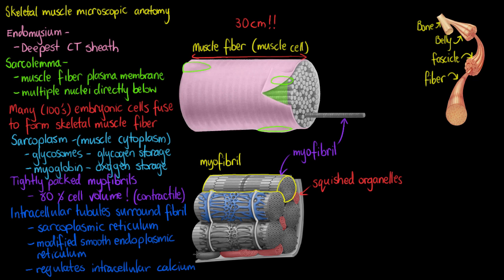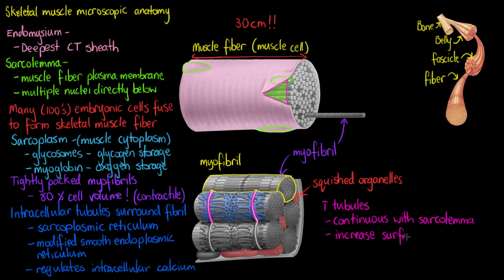The second tubule is called the T-tubules, shown here in a brighter colour between the end portions of the sarcoplasmic reticulum. T-tubules are very special because they are continuous with the sarcolemma — the plasma membrane of the muscle fibre. The reason we need something inside the cell continuous with the plasma membrane is to massively increase the surface area, allowing the sarcolemma to form T-tubules that reach down into the deepest points of the myofibrils within the cell. This helps conduct contractions deep within the cell.